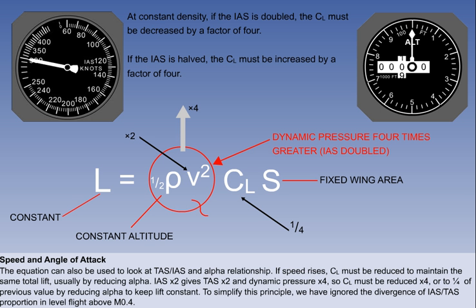To make this principle easy to understand, we can say that TAS will change in proportion to IAS at a constant altitude. This is, however, not true of speeds above Mach 0.4.